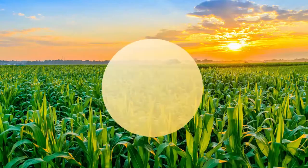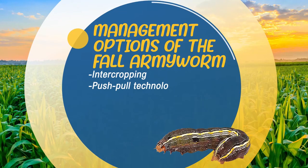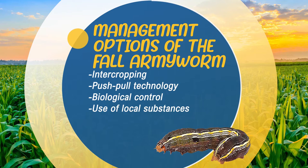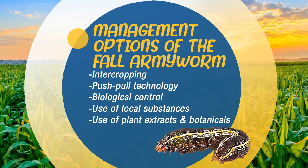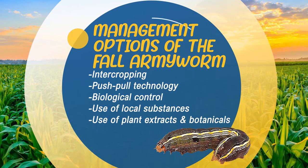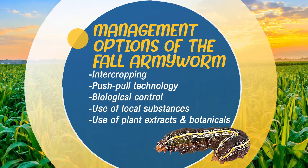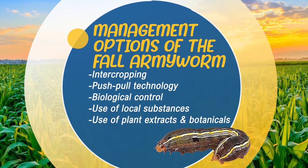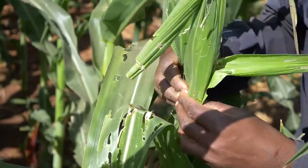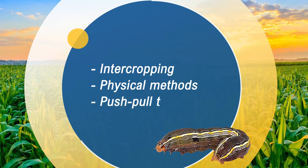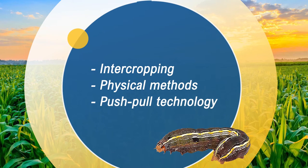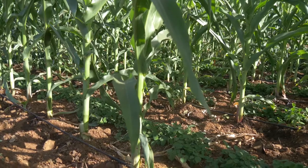These methods include intercropping, push-pull technology, biological control, use of biopesticides, use of local substances, and use of plant extracts and botanicals. In this episode we are going to talk about three management options: intercropping, use of physical methods, and the push-pull technology.